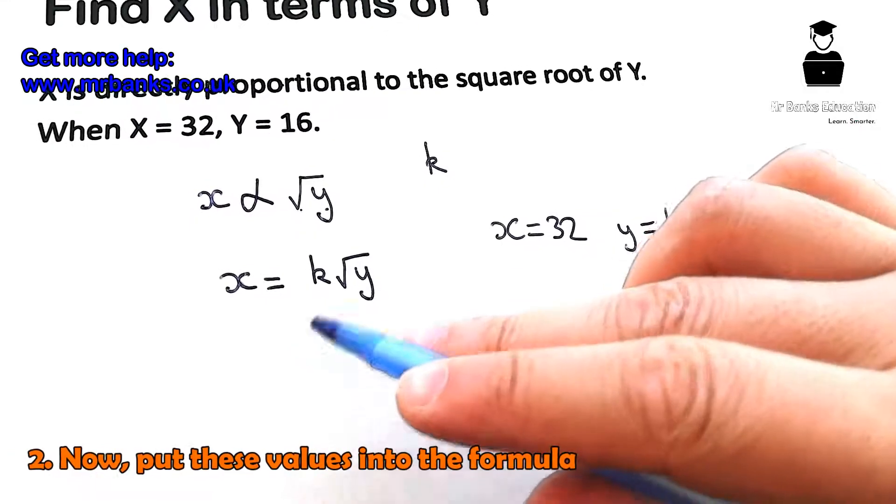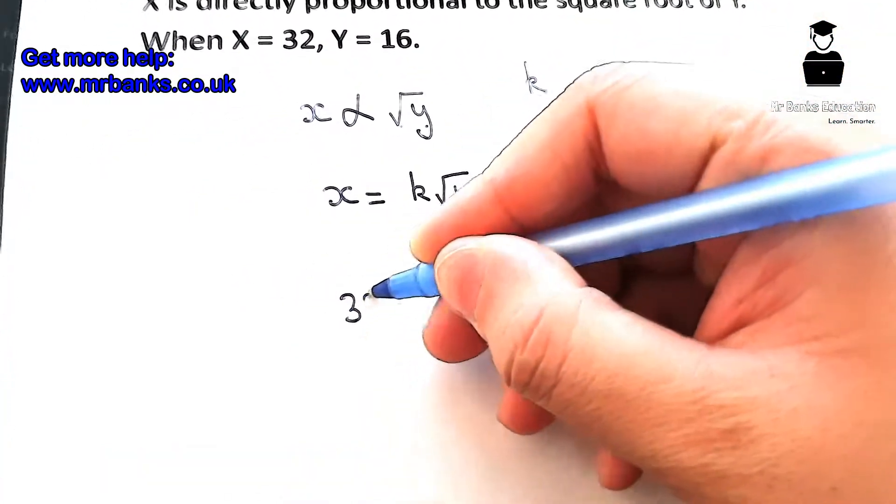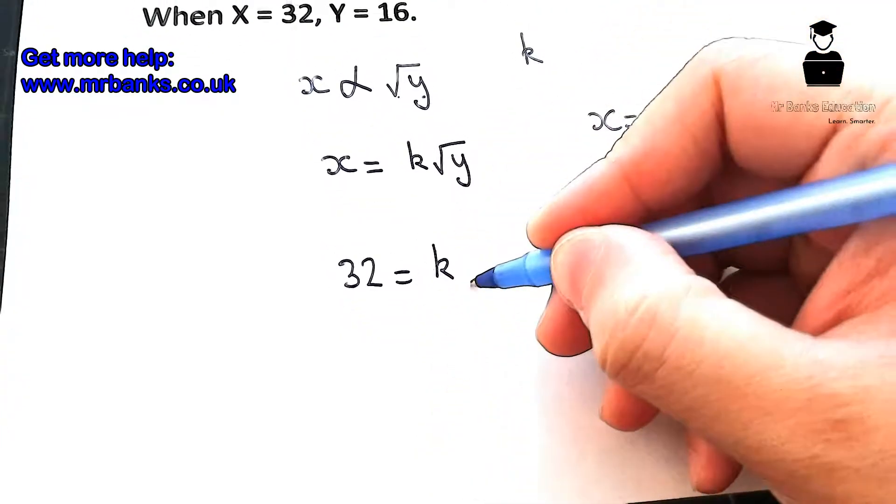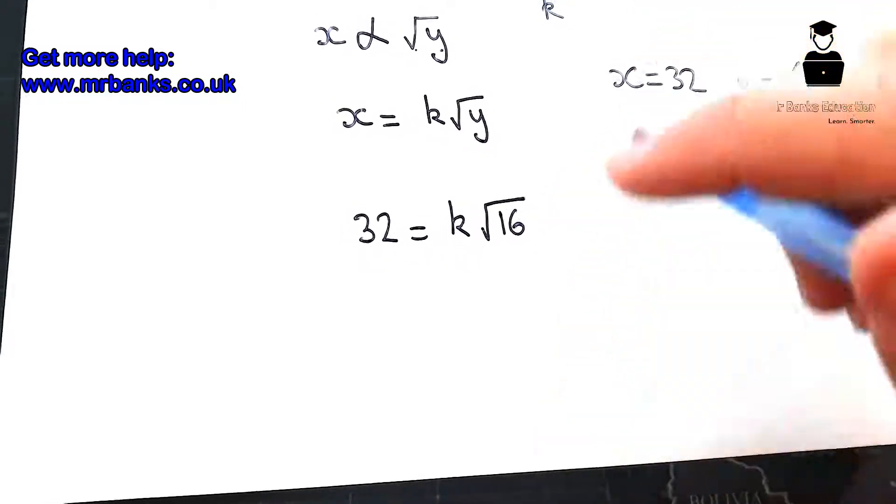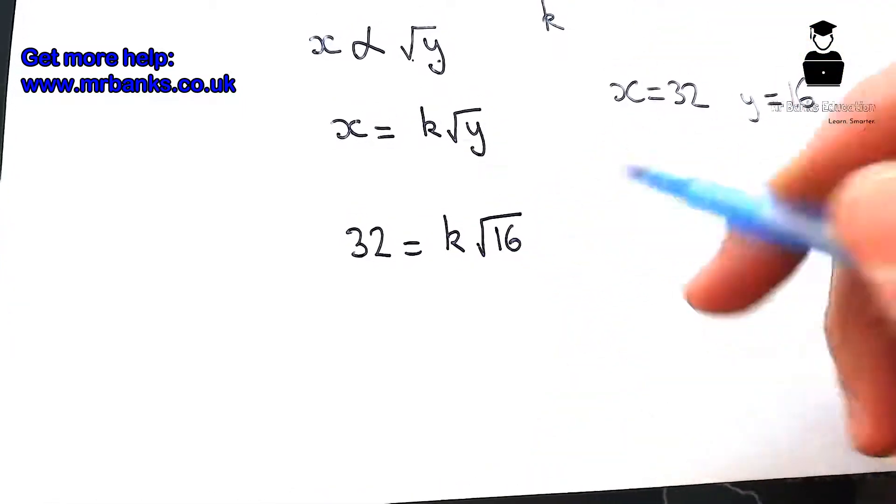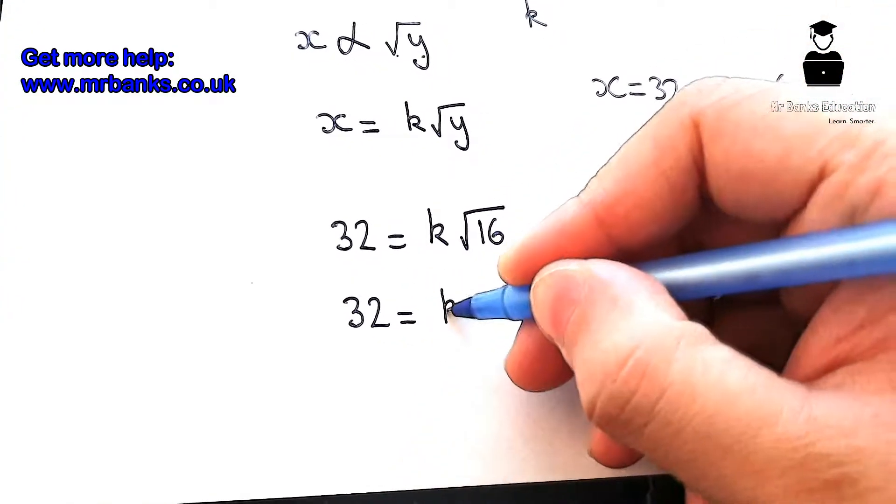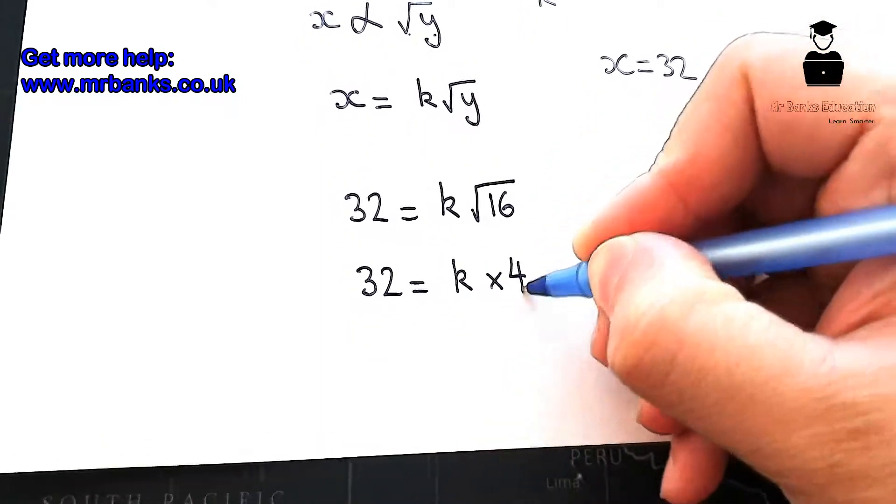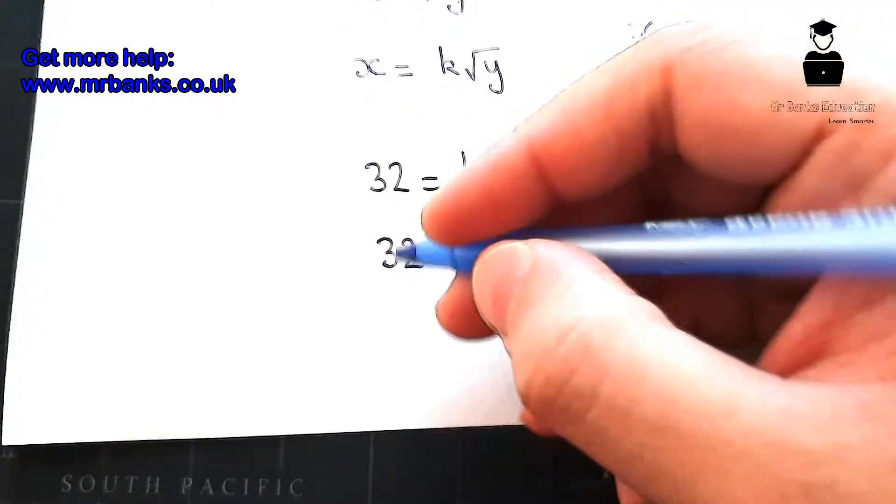We're just going to put those values in here so we can find our k. So X equals 32, k we don't know, that's what we're trying to find, and then root Y. What's the Y? The Y was 16. So 32 equals k times root 16. Let's just simplify it. 32 equals k, now root 16 is 4, so k times 4, or 4k. That means 32 divided by 4 must equal k, and that must mean that k equals 8.